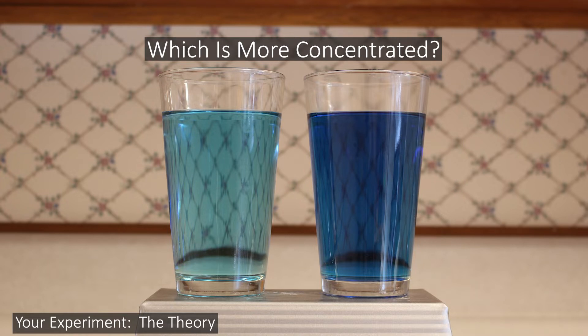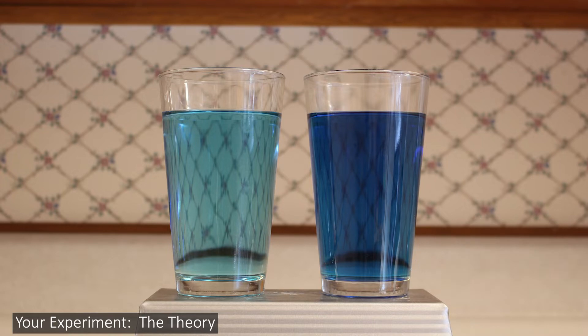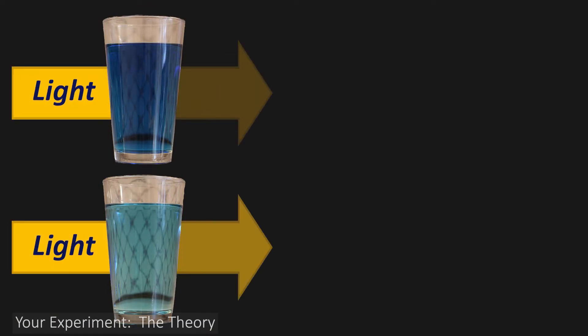If you wanted to know which one had more mix in it, you could tell just by looking at them and seeing which one is darker. In this case, the darker one is the one that moved to the top. It has more blue dye in it, and so when light passes through the two glasses, it absorbs more of that light and that makes it look darker.